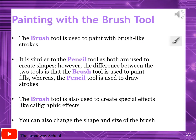Page number 140: Painting with the Brush Tool. The brush tool is used to paint with brush-like strokes. It is similar to the pencil tool as both can be used to create shapes. The difference is that the brush tool is used to paint fills, whereas the pencil tool is used to draw strokes. In Flash, every shape has two things: the stroke and the fill. The stroke is drawn with the pencil and the fill is done with the paint brush.